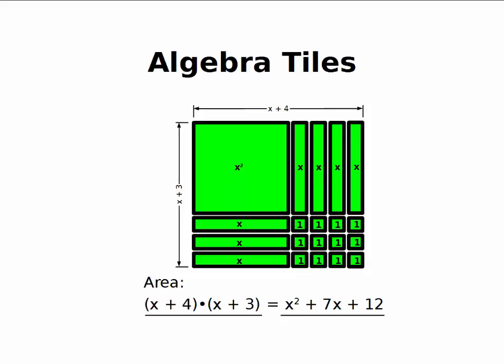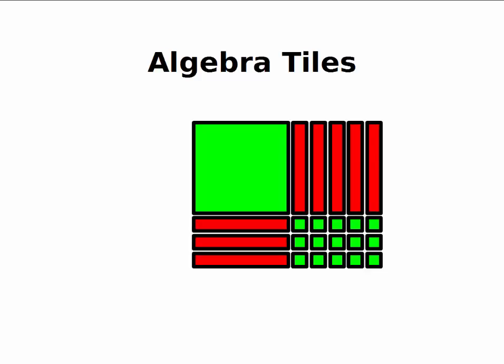Now, one thing you might have noticed is all of these numbers were positive. So we can represent negatives using the other side of the algebra tiles. So this rectangle represents an x minus 5 on top because it's a minus 5 because those are red. And along the side, it's an x minus 3. And it's a minus 3 because those are red. When we multiply a negative 3 times a negative 5, we get a positive 15. That's why the little 1 squares are all green.